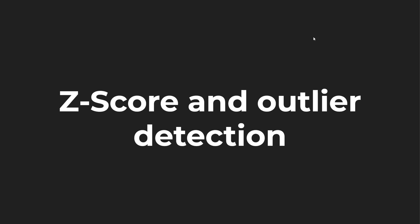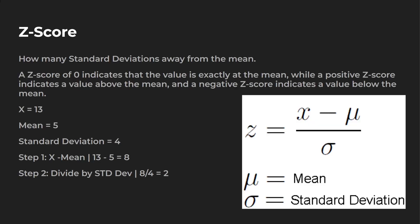Let's take a look at a little bit behind the Z-score and outlier detection. The Z-score really tells you how many standard deviations you are away from the mean. A Z-score of zero indicates that the value is going to be exactly the mean. A positive Z-score indicates that the value is above the mean, whereas a negative Z-score indicates the value is below the mean.